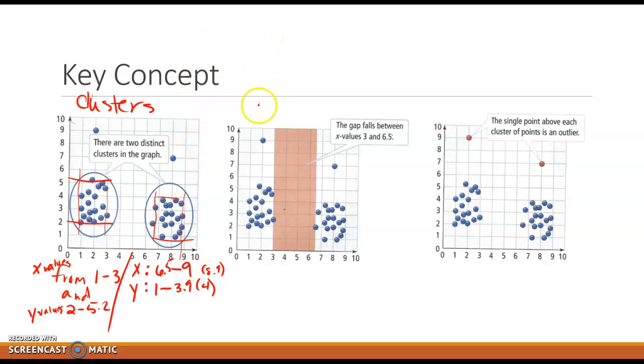Now this next one, this is what we call a gap. And a gap falls between, this one's even telling us that this is falling between three and 6.5. Our gap is, you know, where the points are not. And there's this big gap between them.